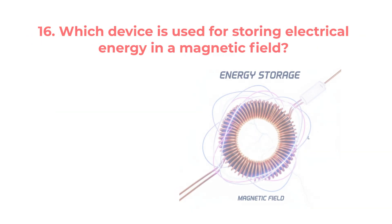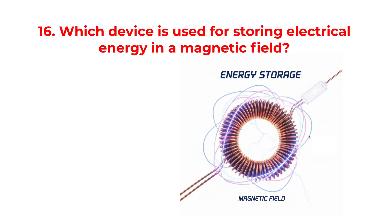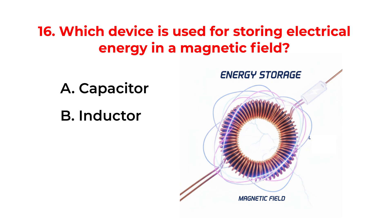Which device is used for storing electrical energy in a magnetic field? A. Capacitor. B. Inductor. C. Diode. D. Resistor.